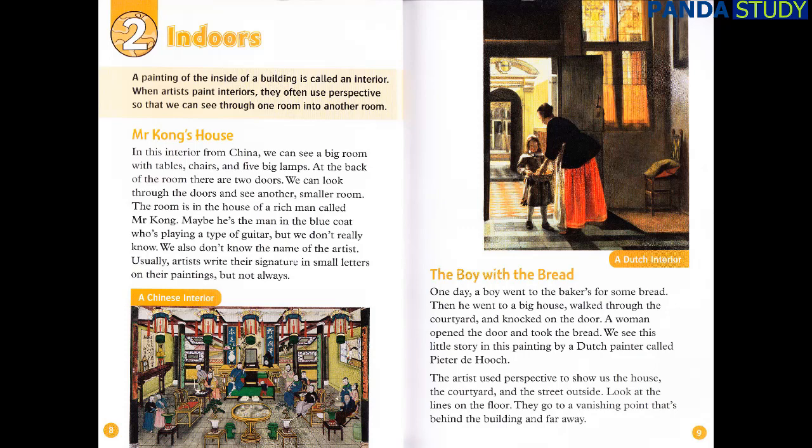Mr. Kong's House. In this interior from China, we can see a big room with tables, chairs, and five big lamps. At the back of the room, there are two doors. We can look through the doors and see another, smaller room. The room is in the house of a rich man called Mr. Kong. Maybe he's the man in the blue coat who's playing a type of guitar, but we don't really know. We also don't know the name of the artist. Usually, artists write their signature in small letters on their paintings, but not always.